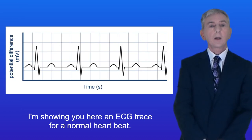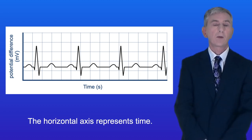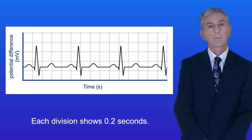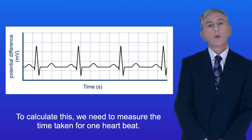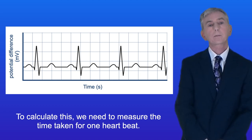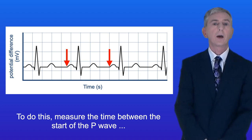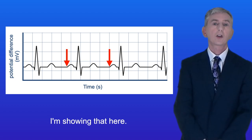I'm showing you here an ECG trace for a normal heartbeat. The horizontal axis represents time and each division shows 0.2 seconds. The heart rate is normally reported as heartbeats per minute. To calculate this we need to measure the time taken for one heartbeat — to do this, measure the time between the start of the P wave and the start of the next P wave, and I'm showing that here.